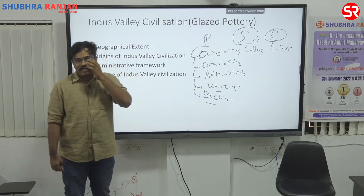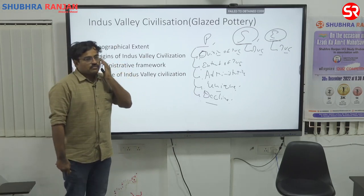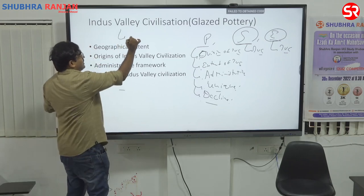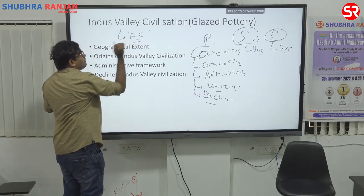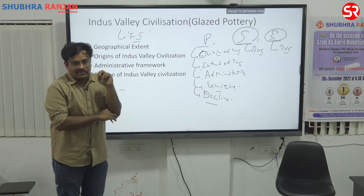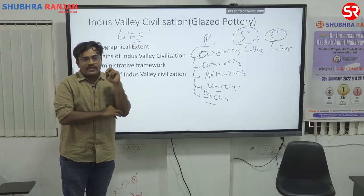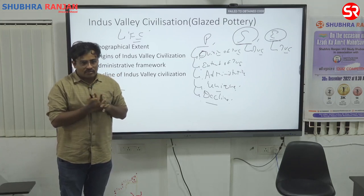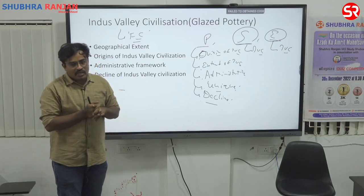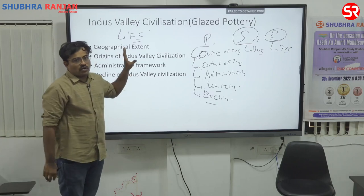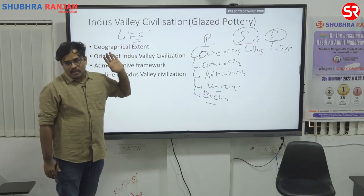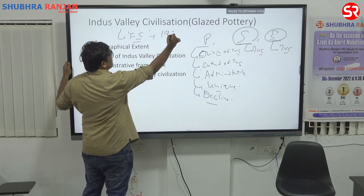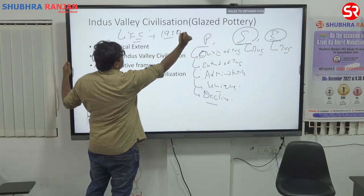The Indus Valley Civilization is in fact considered to be a forgotten civilization, because people did not remember about it. The textual tradition of India starts from the early Vedic period, and what happened before was not known to people. The Indus Valley Civilization sites were first excavated in the year 1922–23.